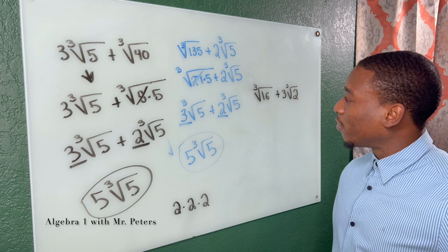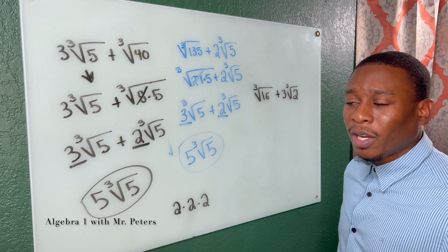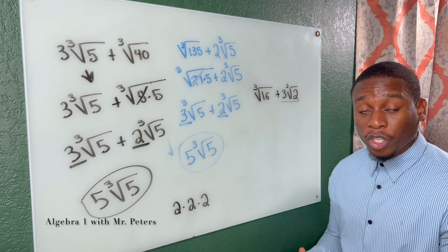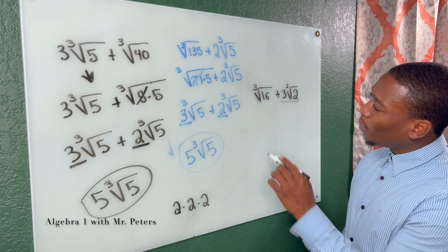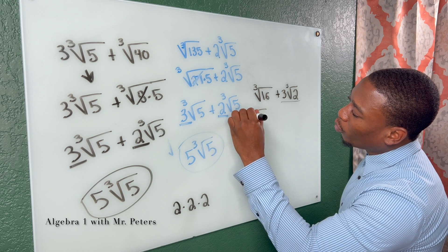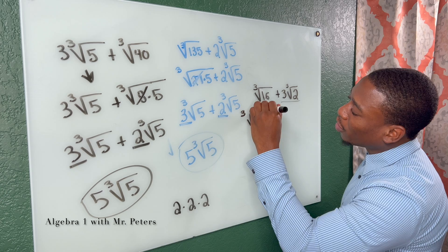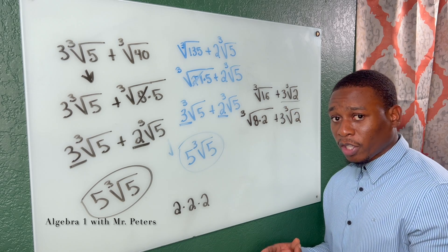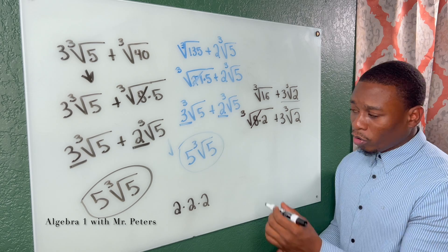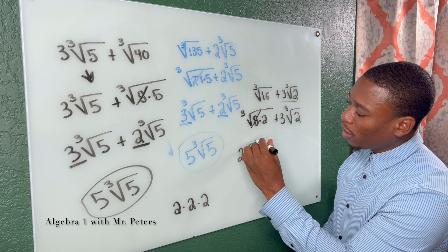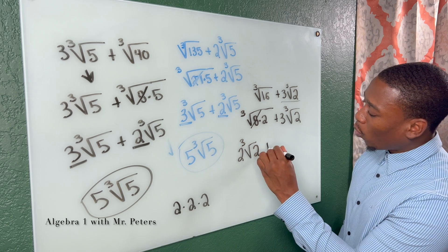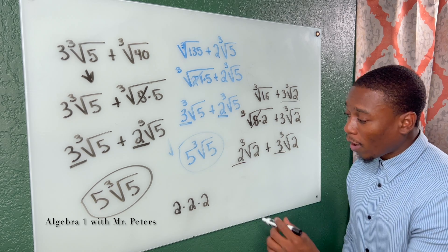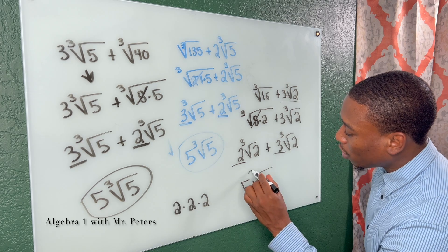The last problem of the video: ∛2 plus 3∛16. There is no cube root of 2, so that term stays. For 16, we write it as ∛(8×2). The perfect cube is 8, and the cube root of 8 is 2, giving 2∛2. Adding the terms: ∛2 + 3 times 2∛2 = ∛2 + 6∛2... wait — combining ∛2 and 2∛2 with 3 outside: we get 2∛2 + 3∛2, which gives a final answer of 5∛2.